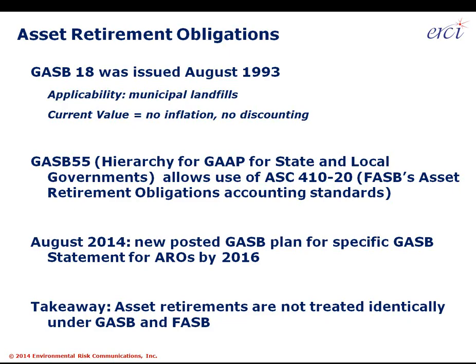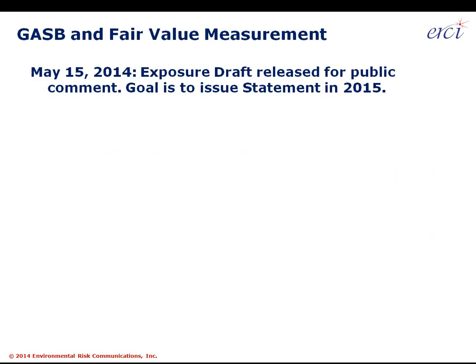GASB is working on a new statement just covering asset retirement obligations — probably a little under two years away based on the plan posted on their website. Let me go over the chronology one more time: GASB 49 is out now, been out for almost eight years. Fair value measurement is coming out soon, probably in the next 12 months. The year after — 2016 — asset retirement obligations. Those are the big three pillars. The standards that will be passed aren't going to be new; they'll basically be applicable restatements of what's already been stated under FASB.